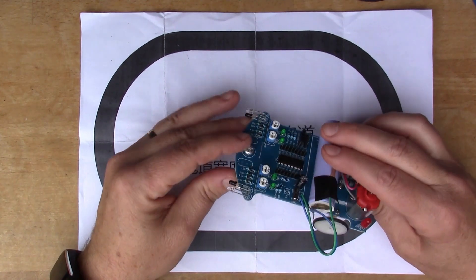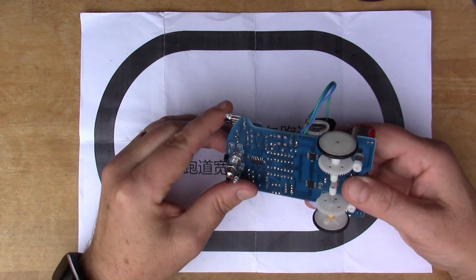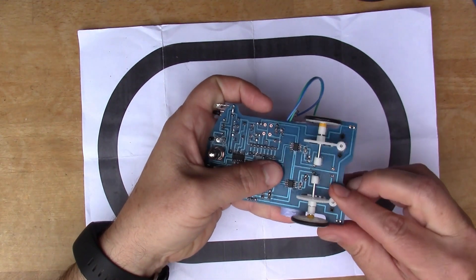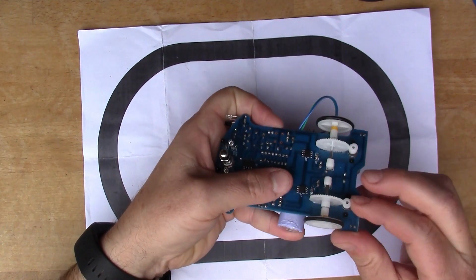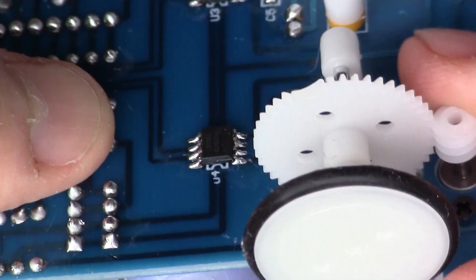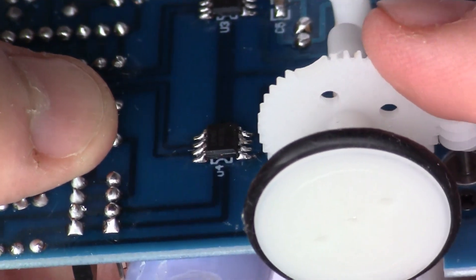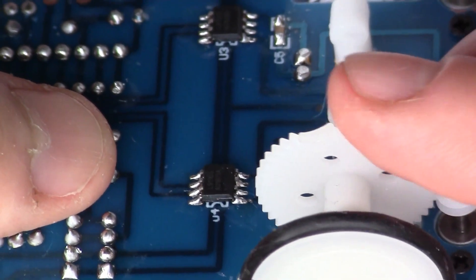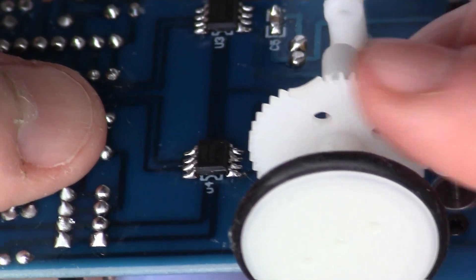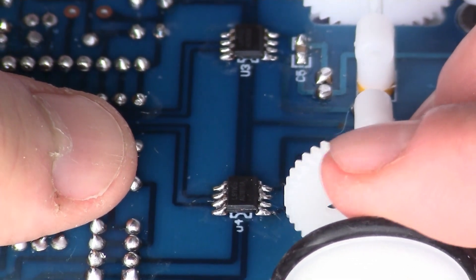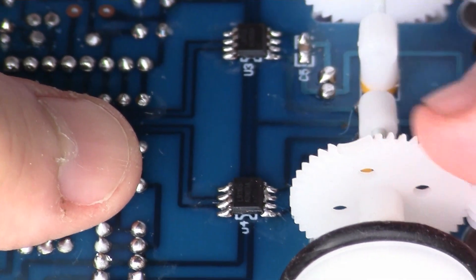That will have to do for the moment. The other thing was I made a mistake here. If I rotate the wheel here you can see there's some teeth missing there. Unfortunately I touched the soldering iron on this gear so I've lost some teeth. I might have to try and repair that with some super glue or something.